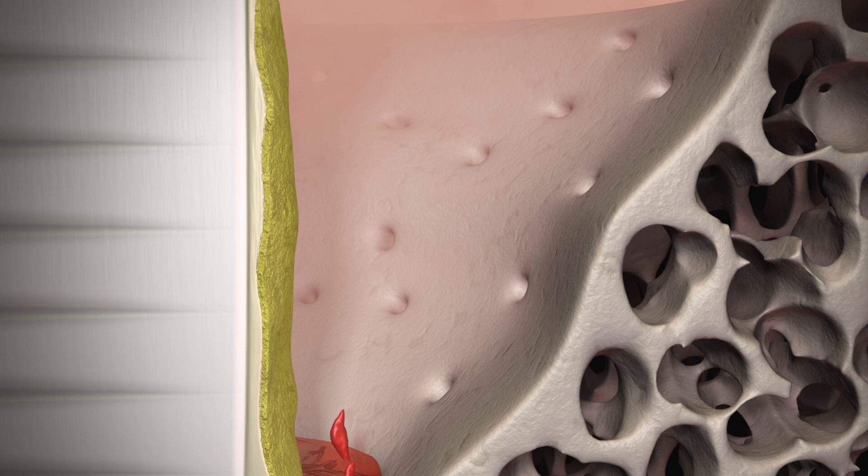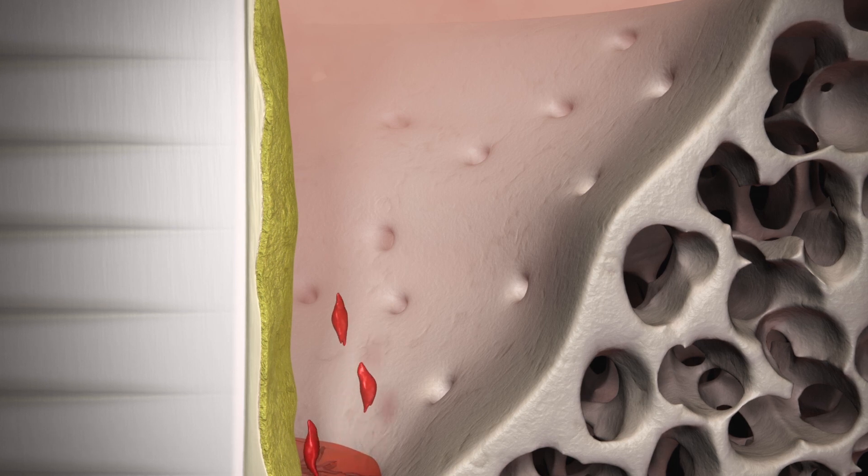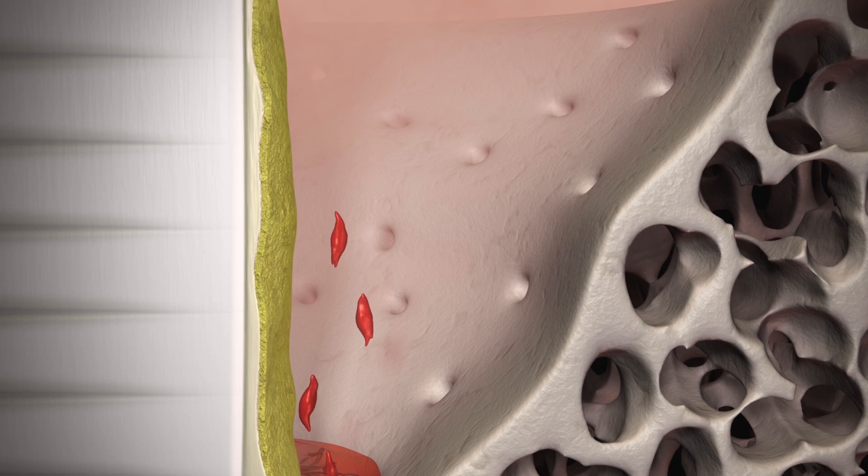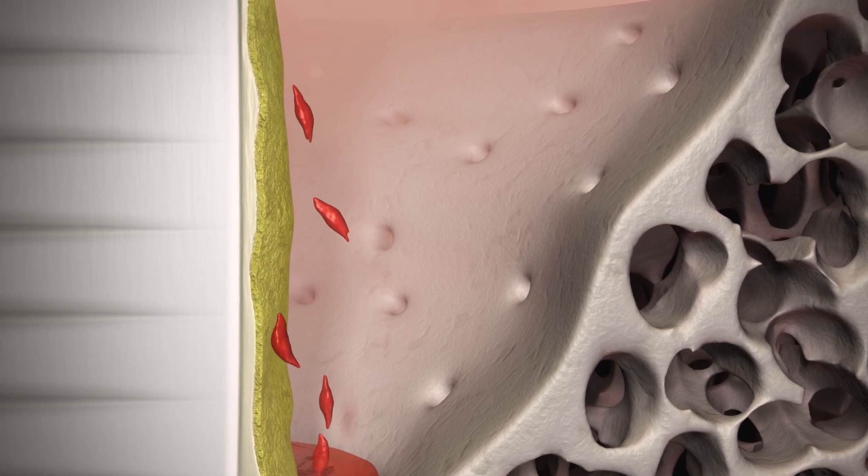The matrix layer of Straumann Emdogain now stimulates the attraction and proliferation of mesenchymal cells from the healthy part of the periodontal ligament.